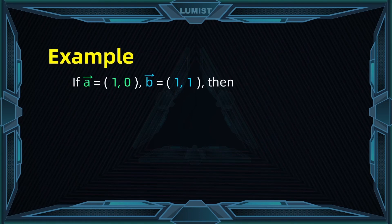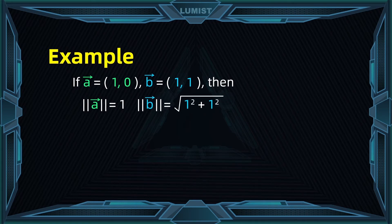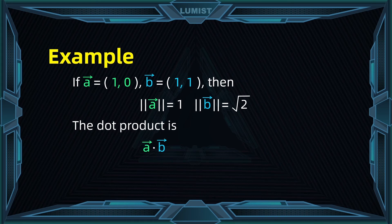For example, if we have two simple vectors — a is [1, 0] and b is [1, 1] — we first calculate the norms of a and b. The norm of a is the square root of 1 squared plus 0 squared, which equals 1. The norm of b is the square root of 1 squared plus 1 squared, which is the square root of 2. Then we compute the dot product a dot b: the first entry of a times the first entry of b is 1 times 1, plus 0 times 1, giving a dot product equal to 1.